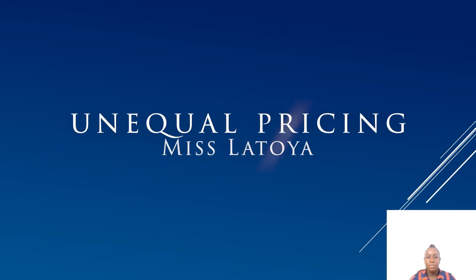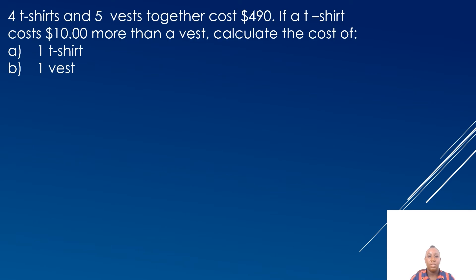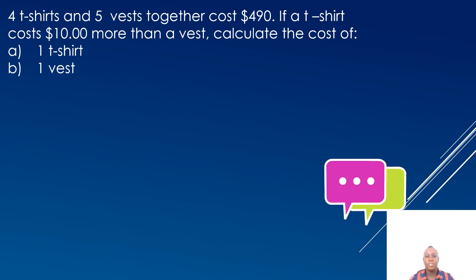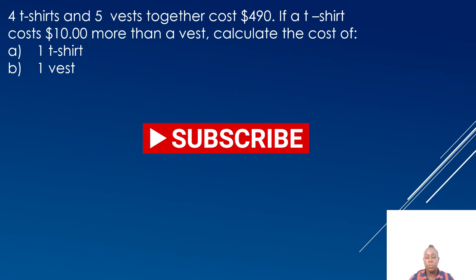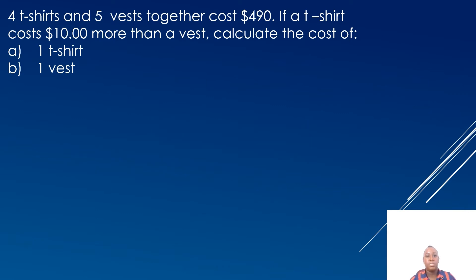We are looking at equal pricing in this video. The first question: four t-shirts and five vests cost $490. If a t-shirt costs $10 more than a vest, calculate the total cost of one t-shirt and one vest. When you get a word problem, I want to encourage you to read it more than once. The first thing I'm going to take note of is the total number of parts — four plus five, a total of nine parts.